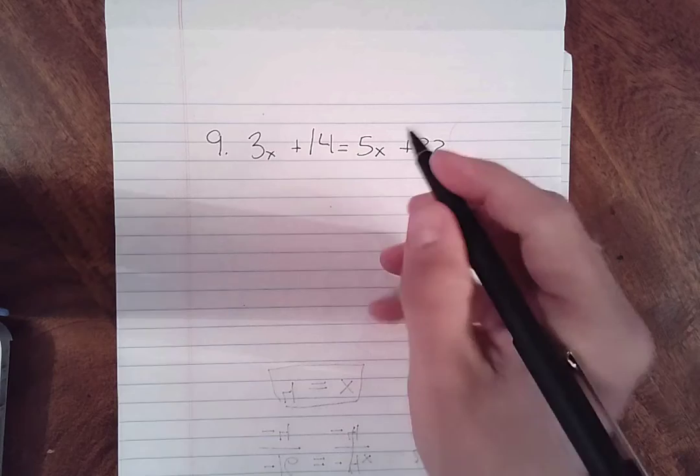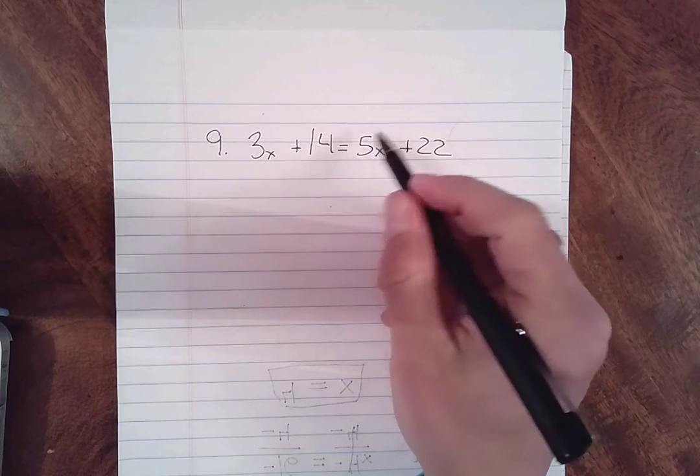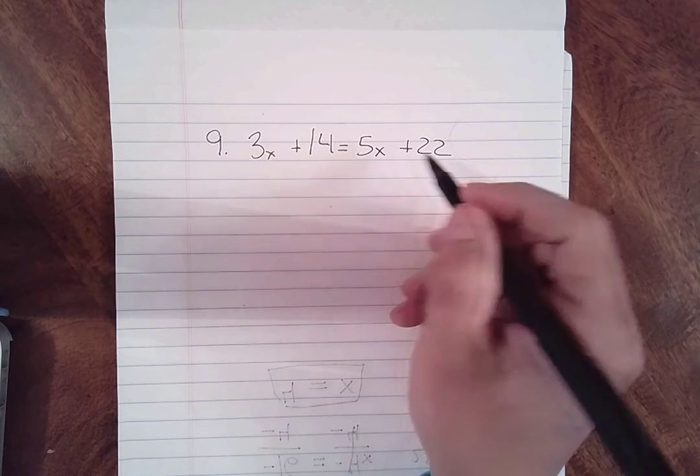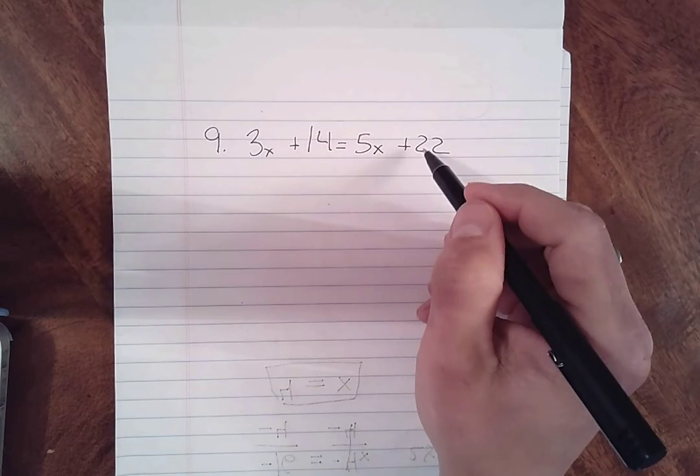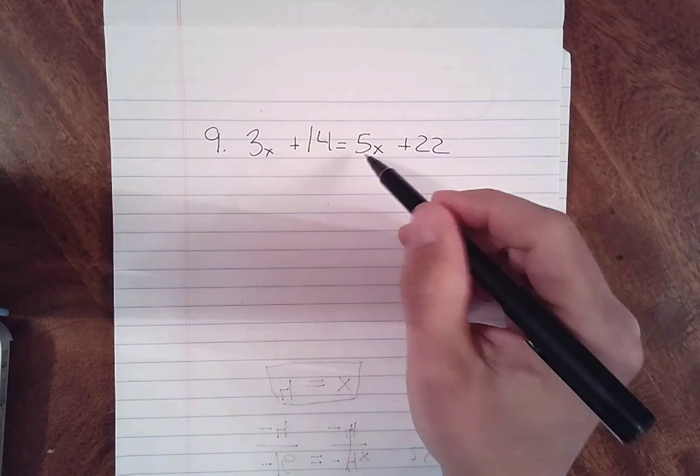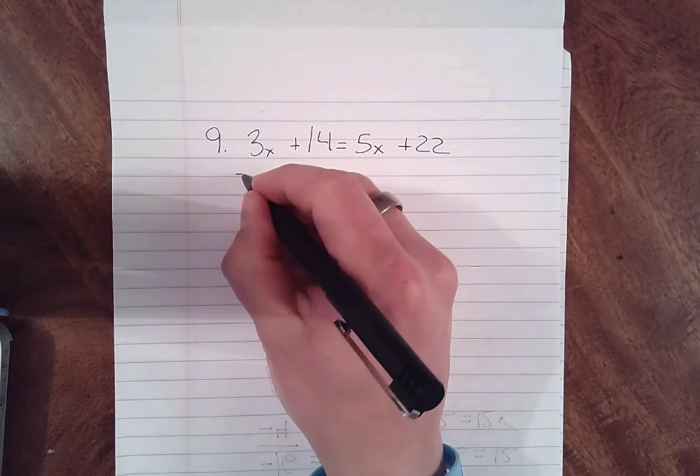In this case our x's are larger over here, our numbers are larger over here too, so we're probably gonna end up with a negative number but a positive x. So that's the way I'm looking at this.